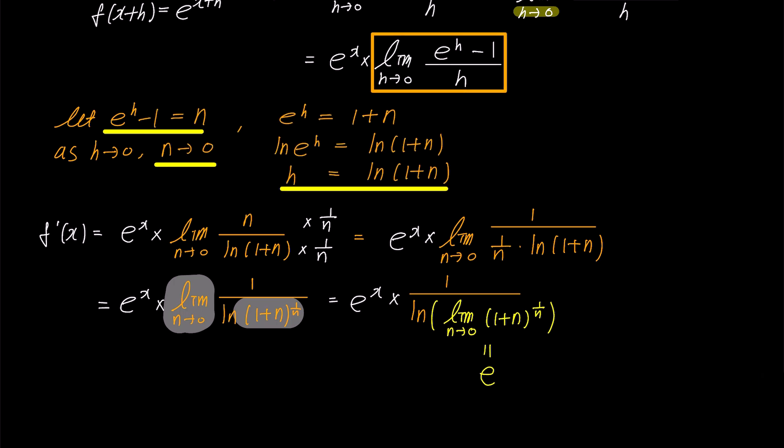So, this expression simplifies to e to the power of x times 1 over ln e, and the fraction denominator simplifies to 1, ultimately leaving us with e to the power of x. In this way, we have demonstrated using the limit definition of derivative and Euler's number why the derivative of e to the power of x is e to the power of x.